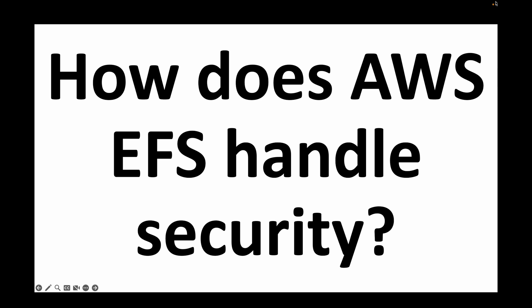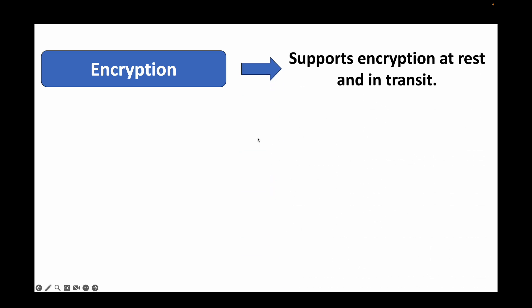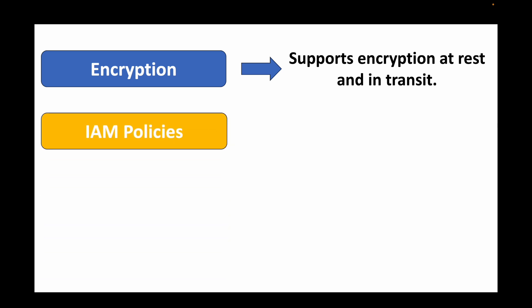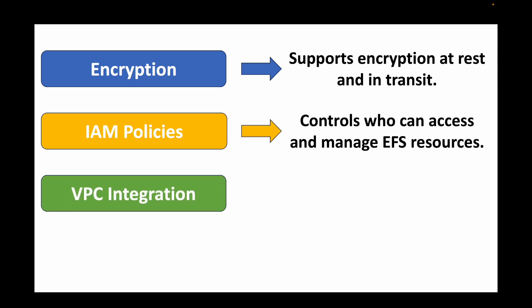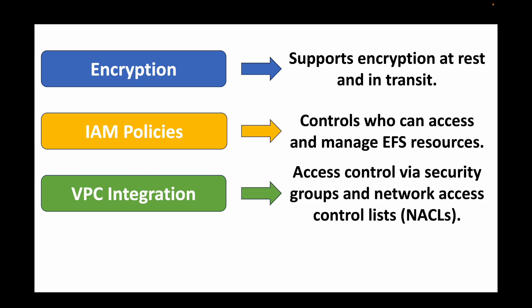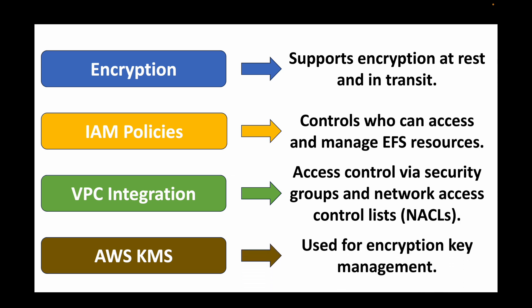The next question is: how does AWS EFS handle security? It provides encryption — both encryption at rest and encryption in transit. You can use IAM policies to control who can access and manage EFS resources. You can integrate it with a VPC to control access via security groups and NACLs at the network layer. You can also use KMS, the Key Management Service, to generate keys for encrypting your data.